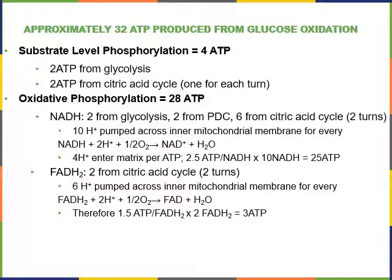From glycolysis and the citric acid cycle we get 4 molecules of ATP: 2 ATP from substrate level phosphorylation in glycolysis, and 2 molecules of ATP from substrate level phosphorylation in the citric acid cycle — one for each turn. One molecule of glucose produces two molecules of acetyl-CoA that can enter the citric acid cycle.